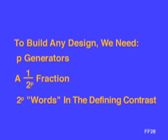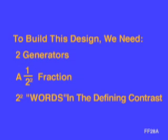Recall that p is used as a counter to help us build and understand our fractional factorial. There are three uses of p. In general, there are p generators. The fraction is 1 over 2 to the p, and there are 2 to the p words in the defining contrast. For this design, there are two generators, a 1/4 fraction, and 4 words in the defining contrast.